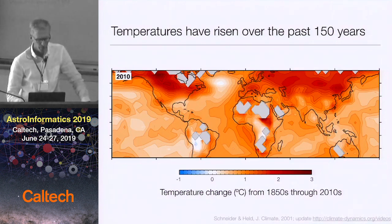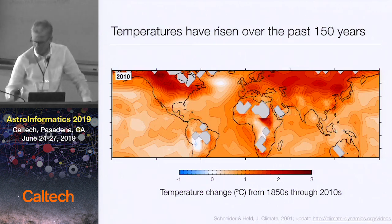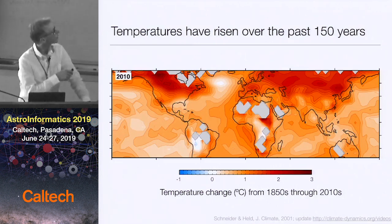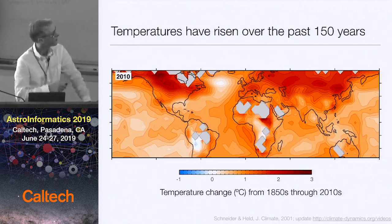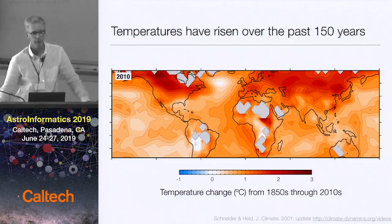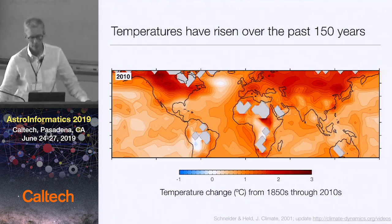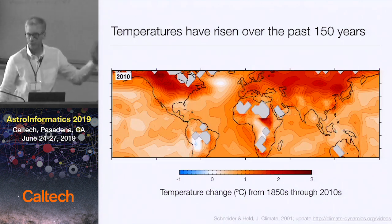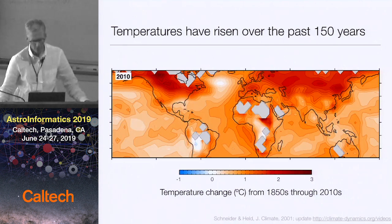If you put some numbers to it — for example over parts of Northern Canada or Alaska — you have warming of four or five degrees in the mean already, and in winter even more. These are truly large changes that are already observable. Of course, the question is what will happen in the future, and there things get a bit murky.